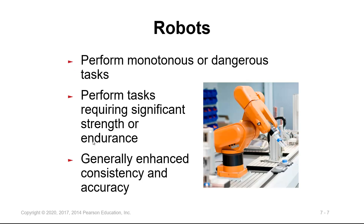Robots perform monotonous or dangerous tasks. They can perform tasks requiring significant strength or endurance, such as robots used in car assembly that do very heavy lifting. Robotic arms provide consistency and accuracy, especially in welding, pressing, cutting, milling, and drilling.